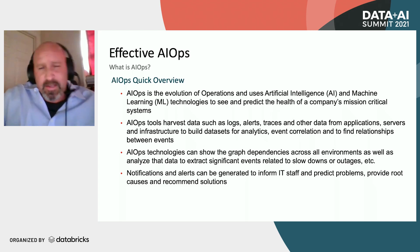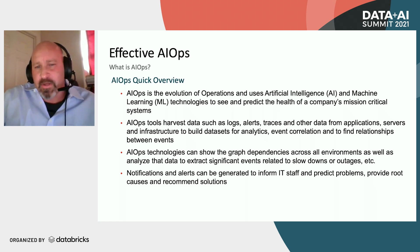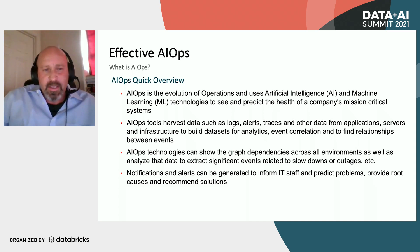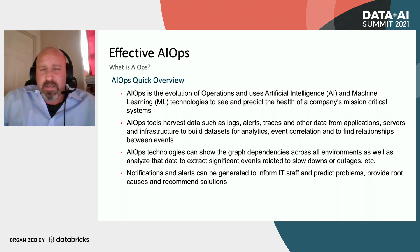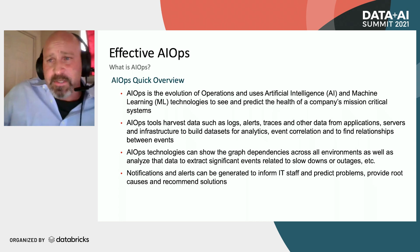AIOps tools harvest data such as logs, alerts, traces, and other data from applications, servers, and infrastructure to build data sets for analytics, event correlation, and to find relationships between events. AIOps technologies can show the graph of dependencies across all environments, as well as analyze data to extract significant events related to slowdown, outages, or other problems. Notifications and alerts can be generated to inform IT staff, predict problems, provide root cause analysis, and recommend solutions.